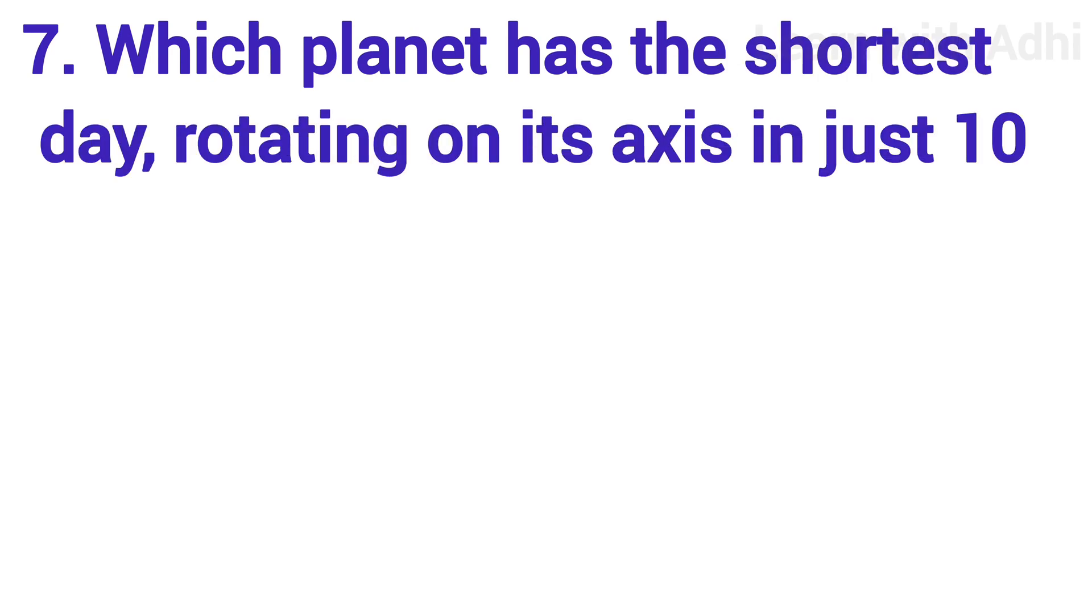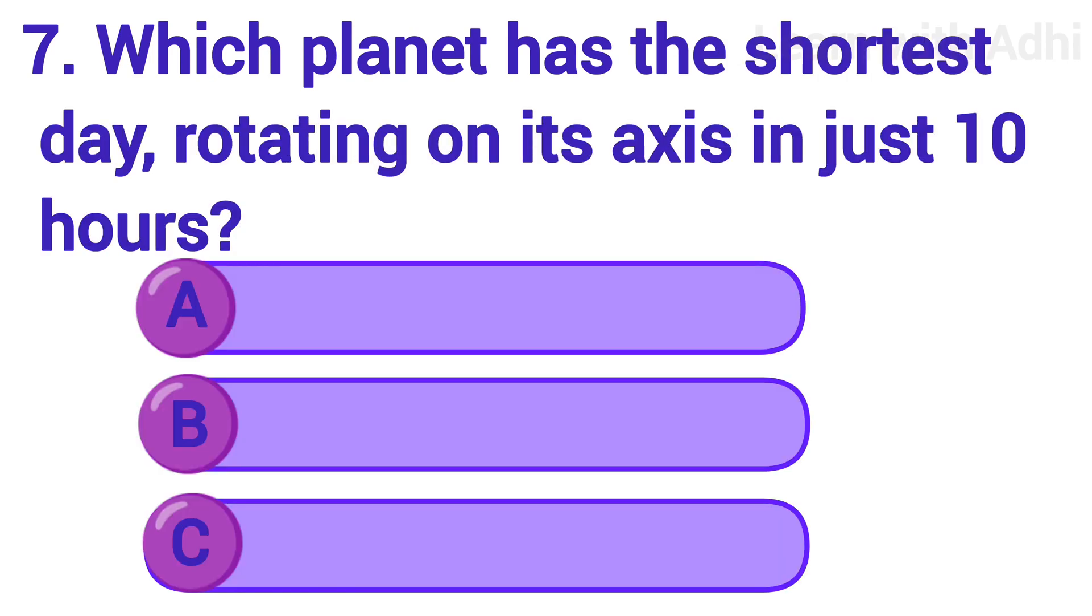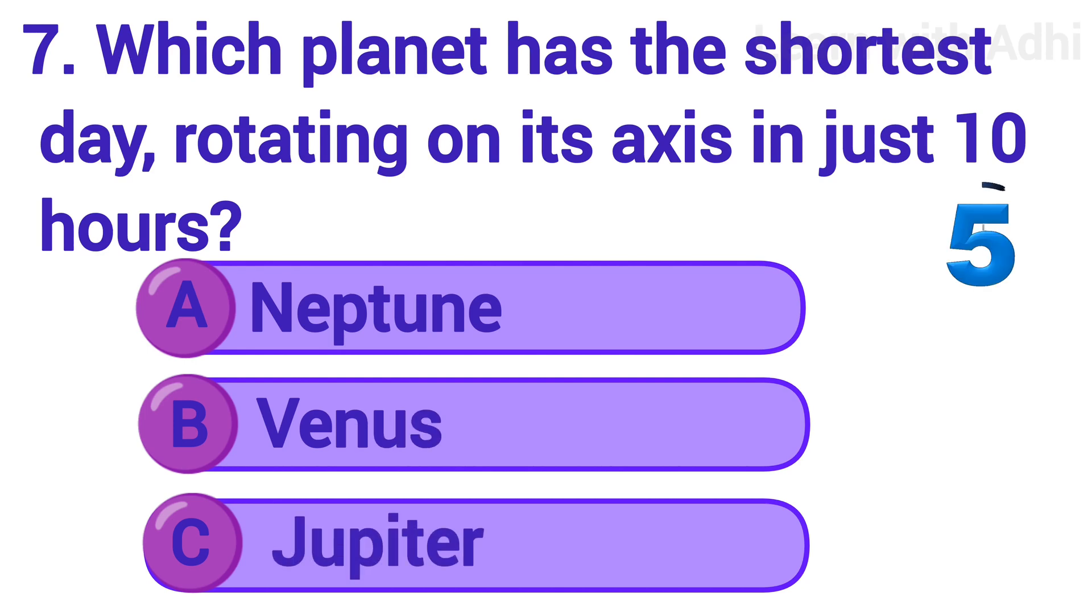Which planet has the shortest day, rotating on its axis in just 10 hours? Jupiter.